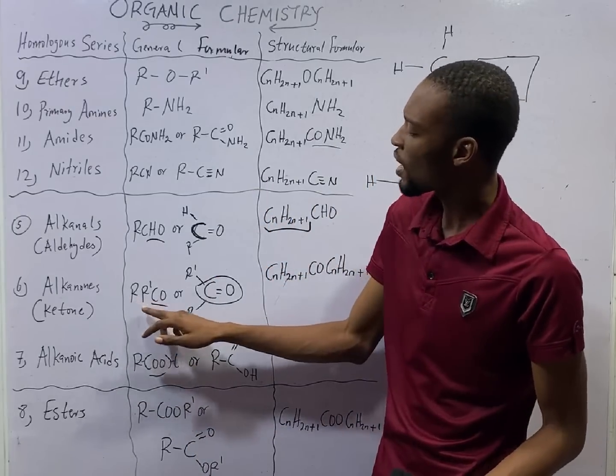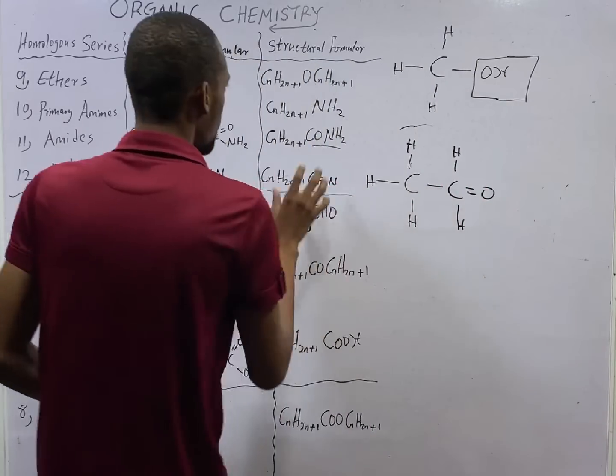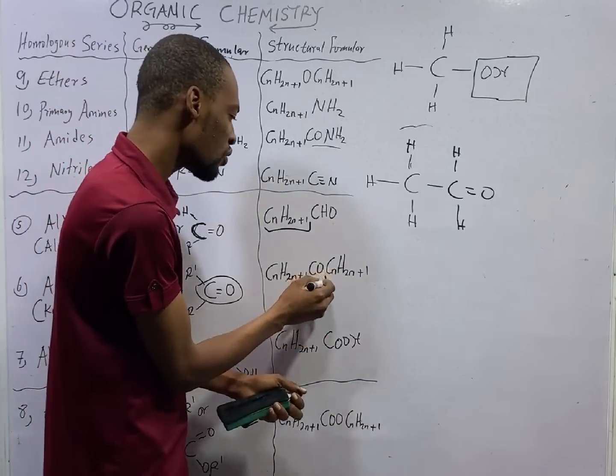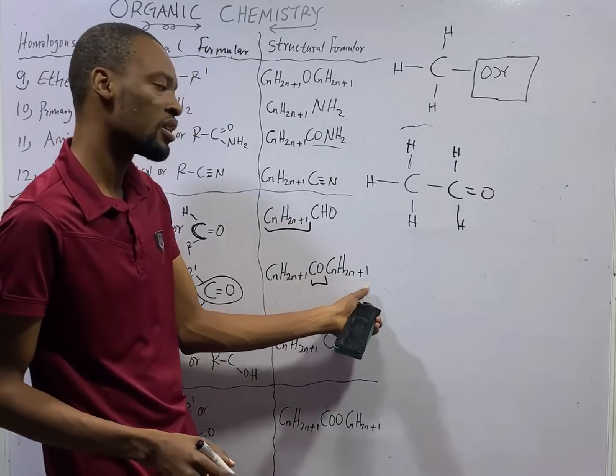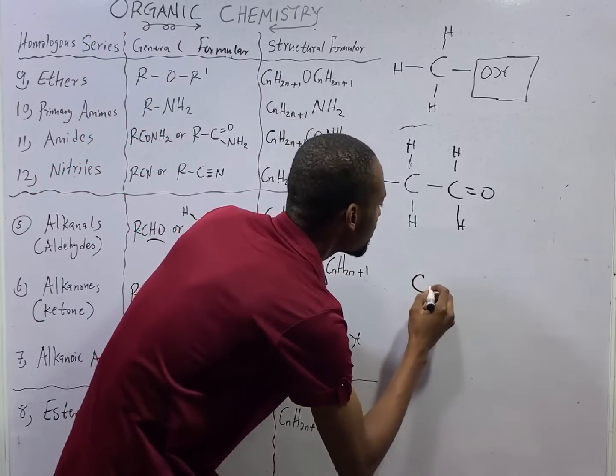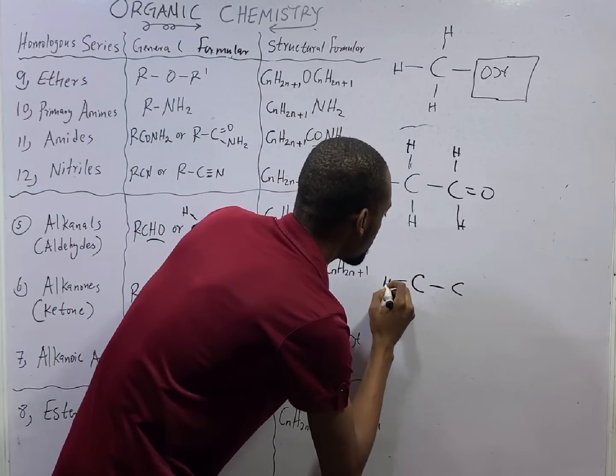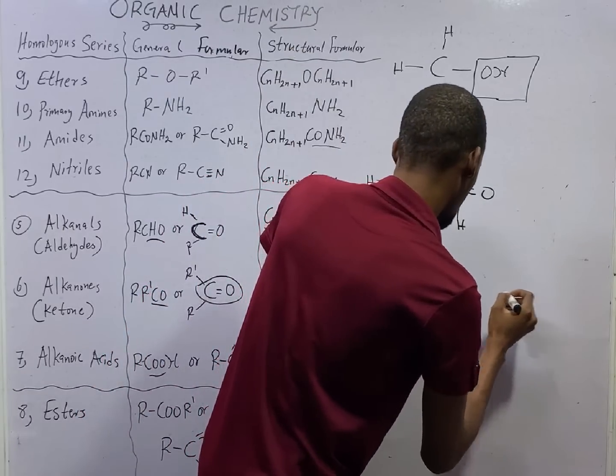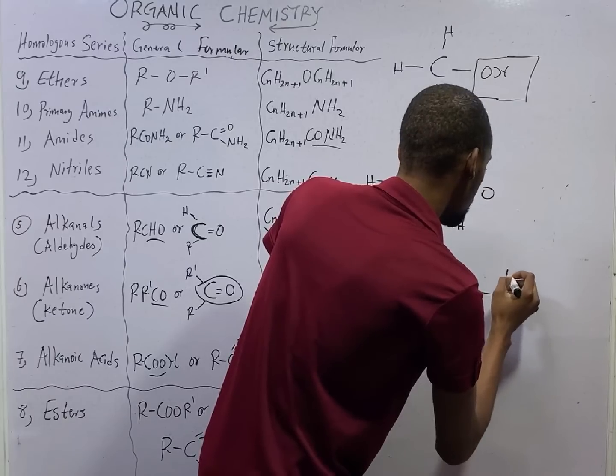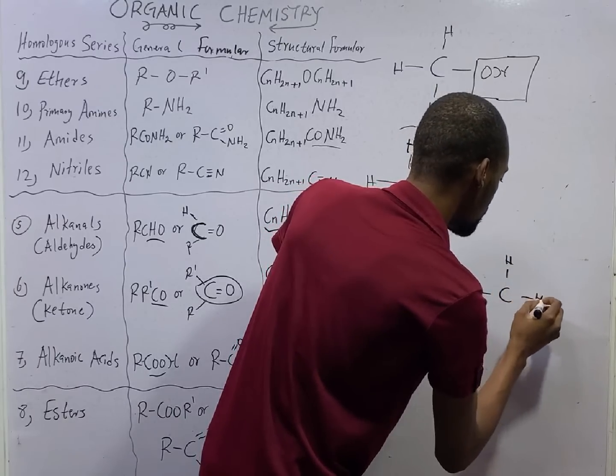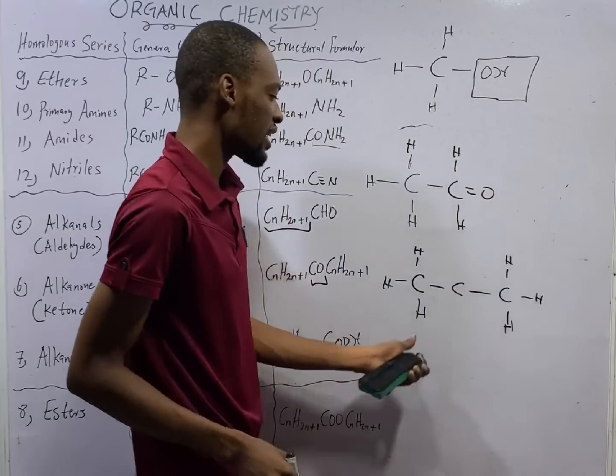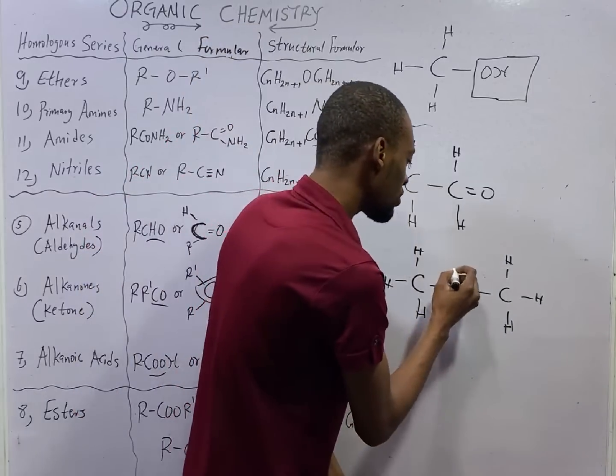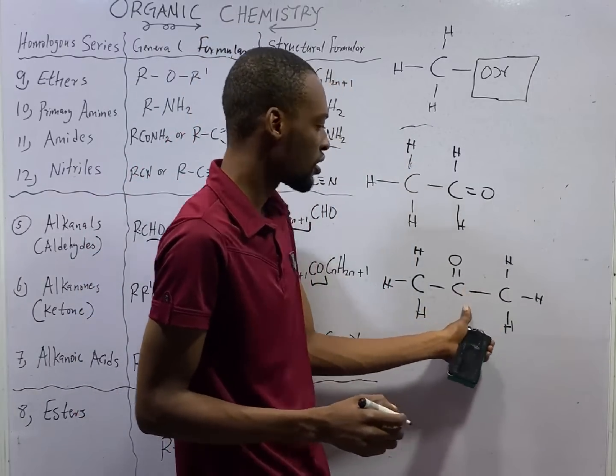That is why it is R R' CO, or the structural formula CnH2n+1, then you have the CO, and CnH2n+1. If you have something like this, C, C, H, H, and H, then you have something like this, C, H, H, and H. You see that this carbon needs two bonds to complete. Once you add oxygen here, oxygen can carry two bonds. This is complete.